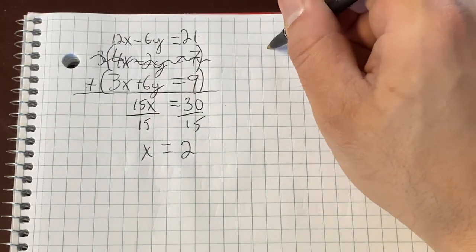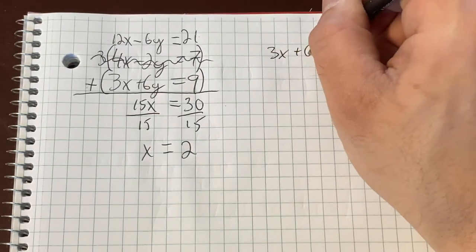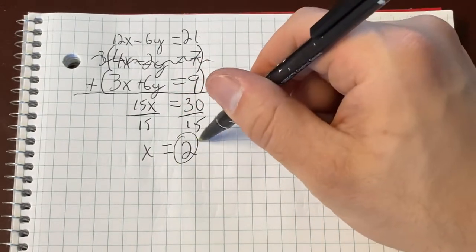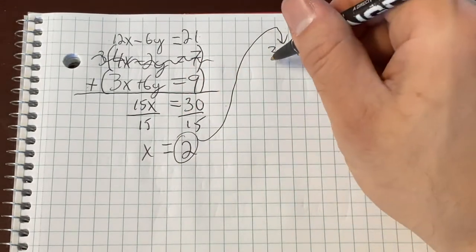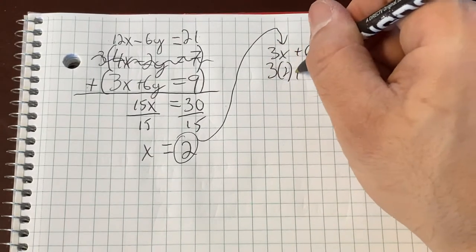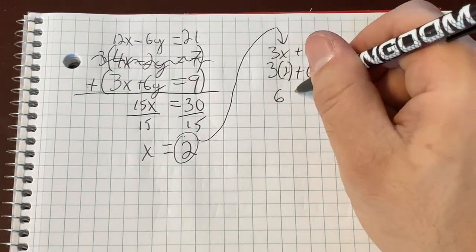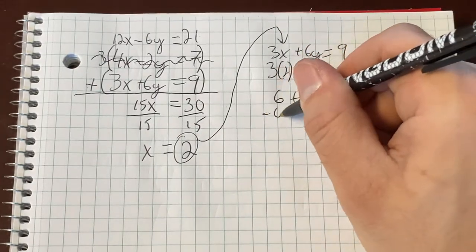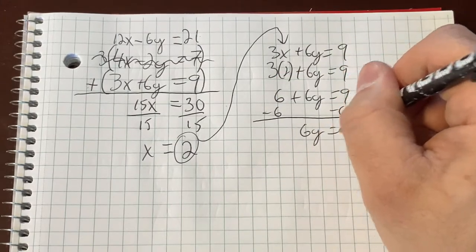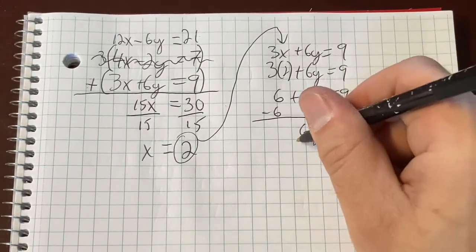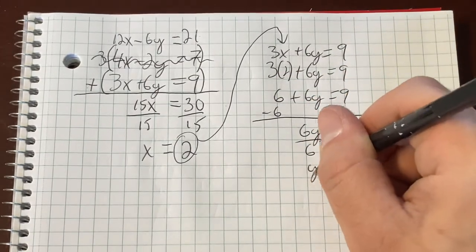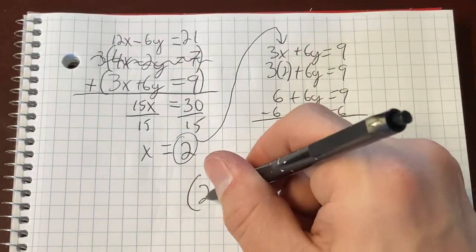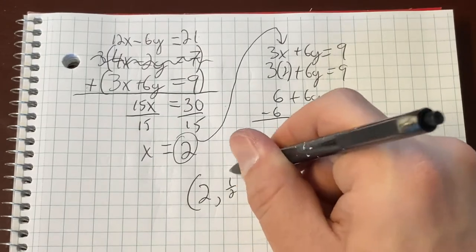Plug it back into either one of these. I'll just take the 3x plus 6y equals 9 because everything's positive. Take our 2. Put it right there because it's x. So 3 times 2 plus 6y equals 9. 6 plus 6y equals 9. Subtract the 6. 6y equals 3. Divide by the 6. And we get a fraction here. We get a 1 half. But that's okay. Final answer. 2 comma 1 half.